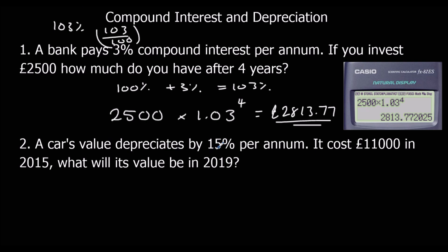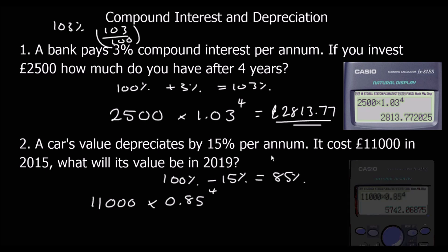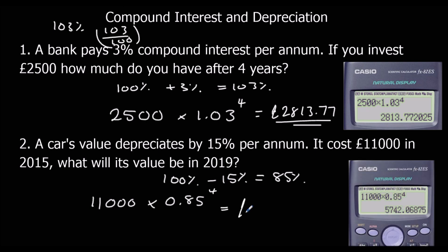Question 2: a car depreciates by 15% per annum. So 100% take off 15% — we want 85% each year. We've got £11,000 times 0.85 to the power of 4, because it's 4 years of percentage changes. That gives us the answer of £5,742.07.